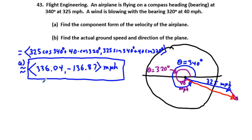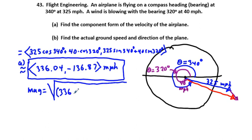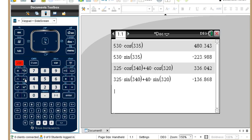For part (b), we need the magnitude (ground speed). That's the square root of (336.04² + (−136.87)²). In the calculator: √(336.04² + 136.87²) ≈ 362.84 miles per hour. So our ground speed is 362.84 mph.